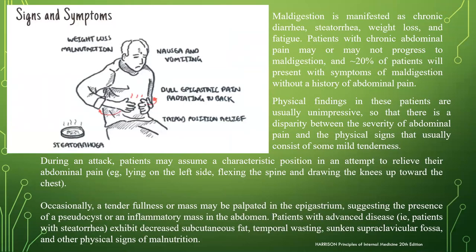Maldigestion is manifested as chronic diarrhea, steatorrhea, weight loss, and fatigue. Up to 20% of patients will present with symptoms of maldigestion without a history of abdominal pain. Physical findings in these patients are usually unimpressive — there is a disparity between the severity of abdominal pain and the physical signs, which usually consist of some mild tenderness. During an attack, patients may assume a characteristic position to relieve pain: lying on the left side, flexing the spine, and drawing the knees up toward the chest. Occasionally, tender fullness or a mass may be palpated in the epigastrium, suggesting the presence of a pseudocyst or inflammatory mass. Patients with advanced disease exhibit decreased subcutaneous fat, temporal wasting, sunken supraclavicular fossa, and other signs of malnutrition.